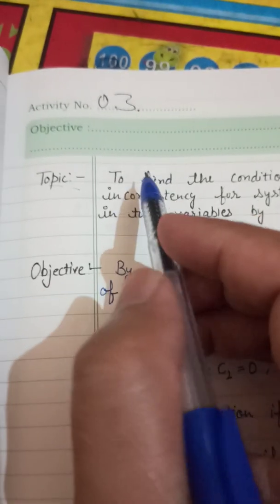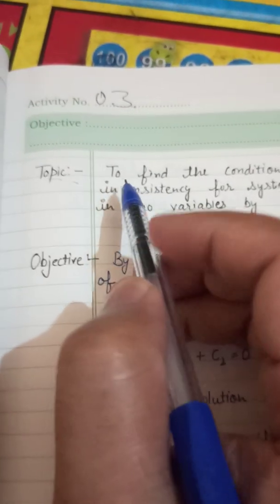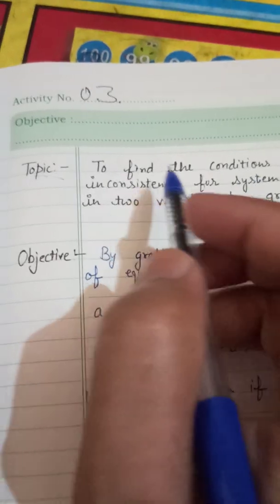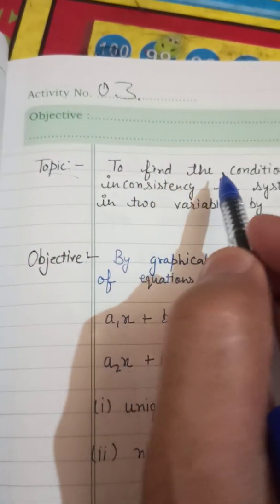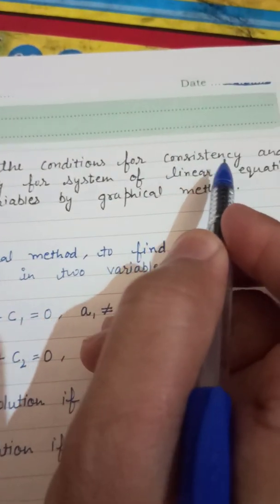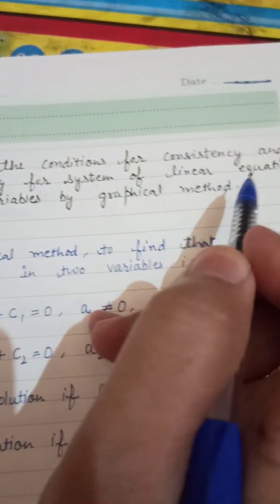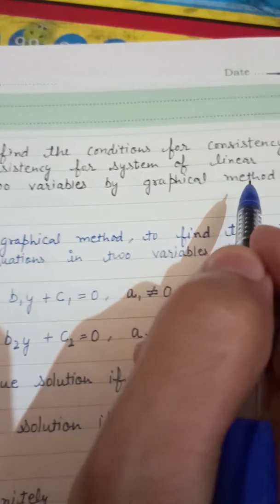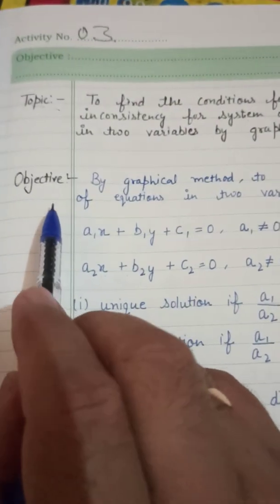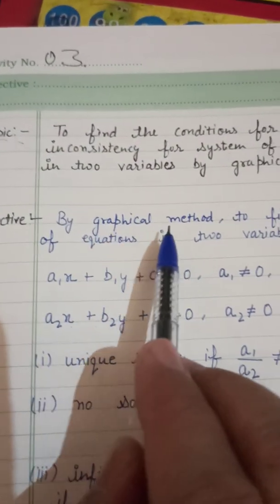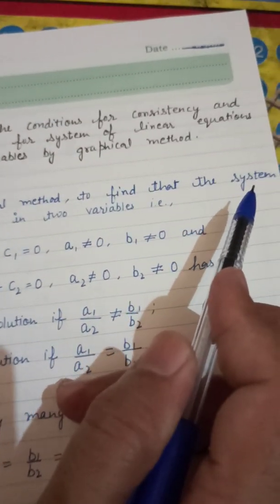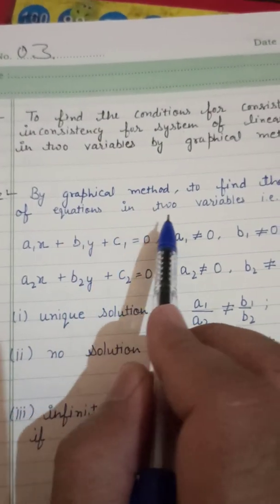Hello students, today we discuss Activity 3, which is related to the NCERT Chapter 3. Our topic is to find the condition for the consistency and inconsistency of a system of linear equations in two variables by the graphical method. Our objective is to find the system of equations in two variables using the graphical method.